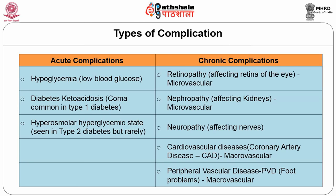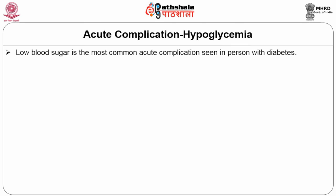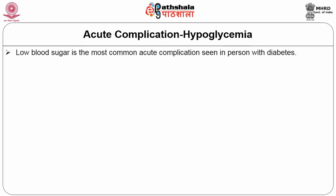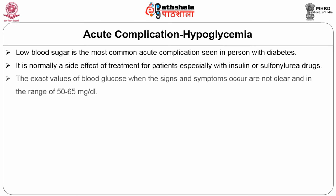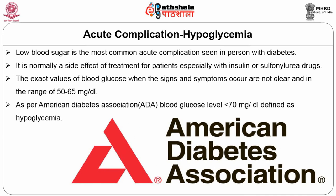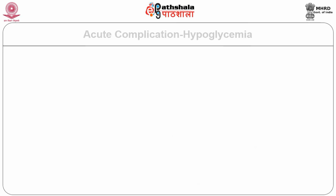Hypoglycemia has the most relevance for nutritionists and dietitians. It is a low blood sugar condition, the most common acute complication, usually a side effect of treatment with insulin or sulfonylurea drugs. The American Diabetes Association defines hypoglycemia as blood glucose dropping below 70 mg/dL. Avoidance of low blood glucose is critical and it can limit glucose supply to neural tissue.